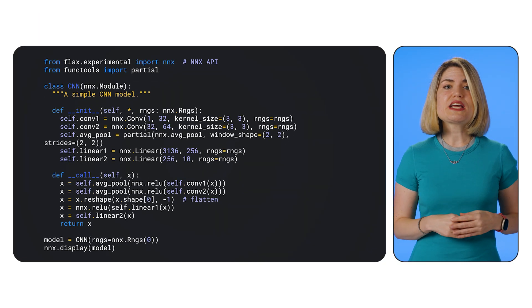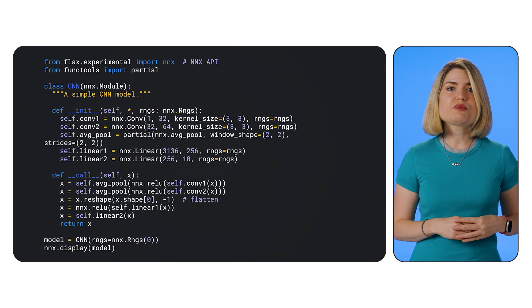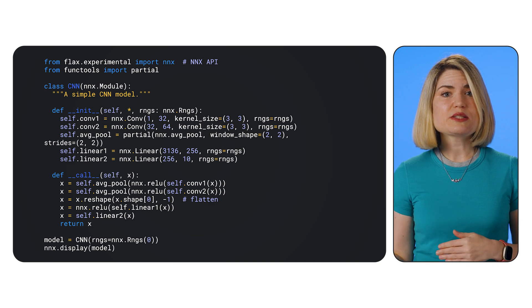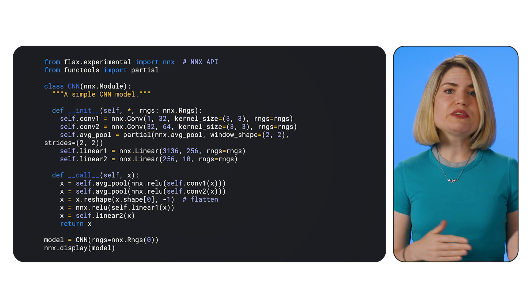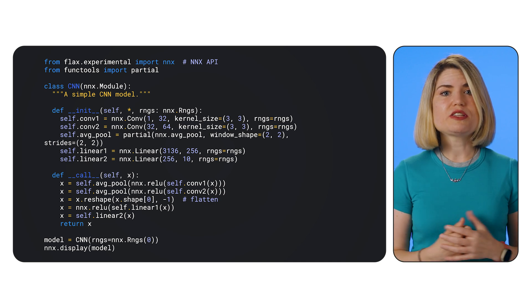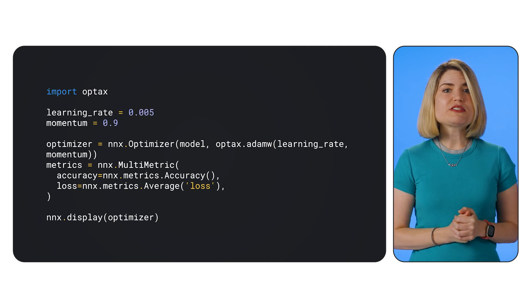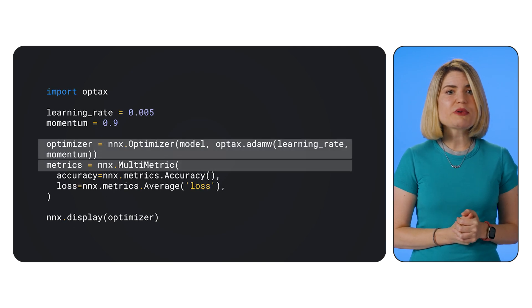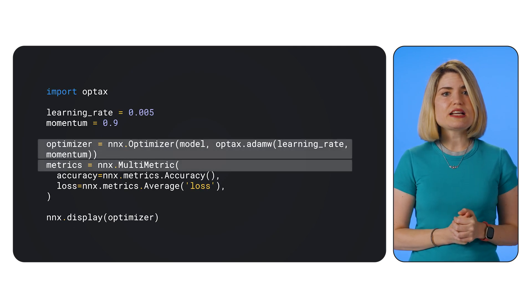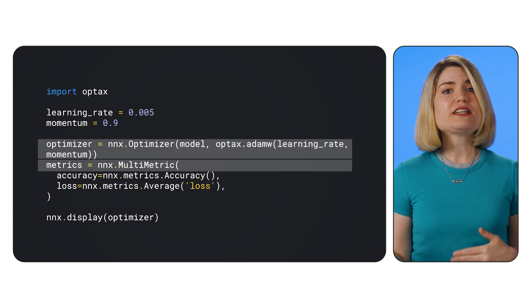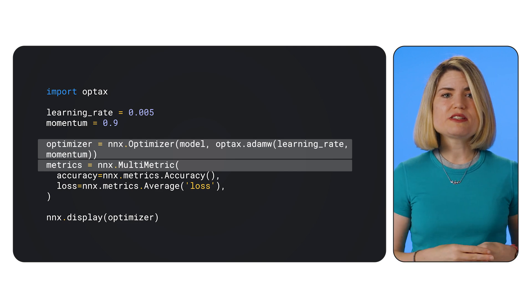So let's ground our understanding with a practical example. We'll build a simple CNN to classify handwritten digits from the MNIST dataset. First, we'll define our neural network using NNX modules like Conv and Linear, which are very similar to their FLAX counterparts. Next, we set up our optimizer and metrics using NNX.Optimizer and NNX.MultiMetric. These objects help manage parameters, supply gradients, and track performance during training.